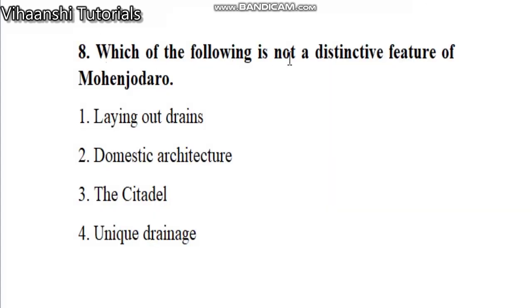Sixth question: which of the following is not a distinctive feature of Mohenjo-daro? Right answer is option 4, Unique Drainage.